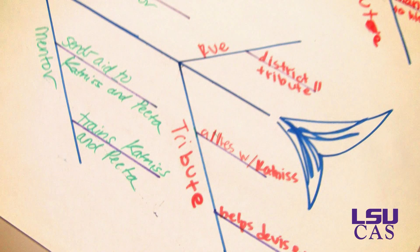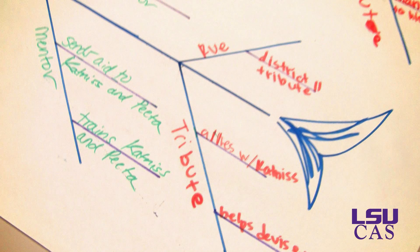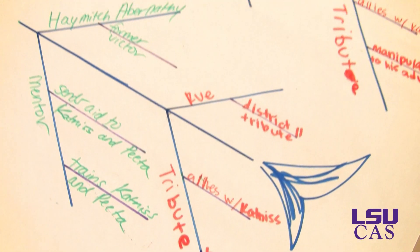Record character information on top and significant situations associated with each character on the bottom. By organizing, grouping, or chunking information, we are able to manage and retain more content. For more information on how to use herringbone or fishbone maps, visit our website.